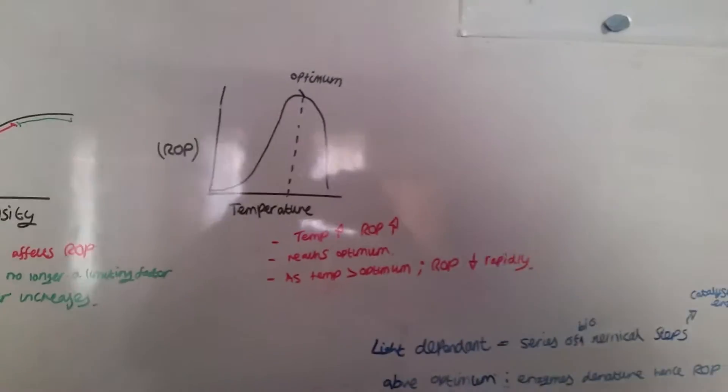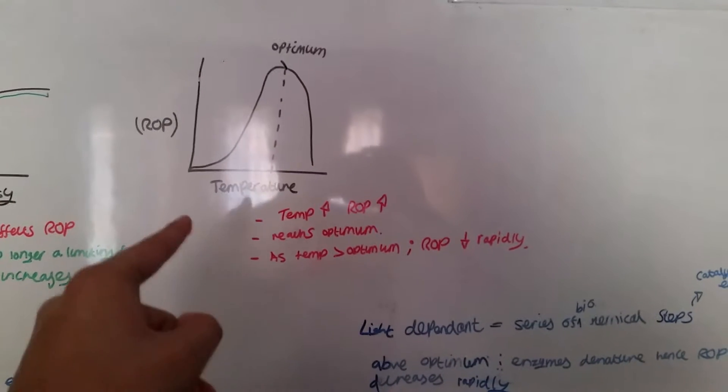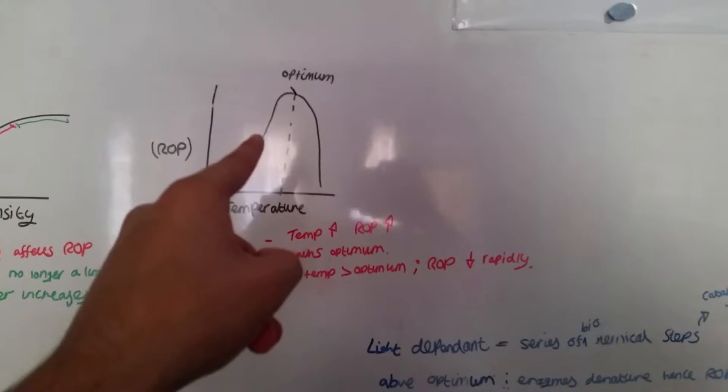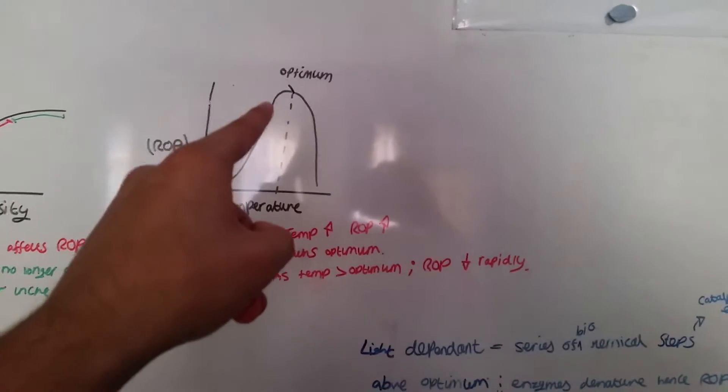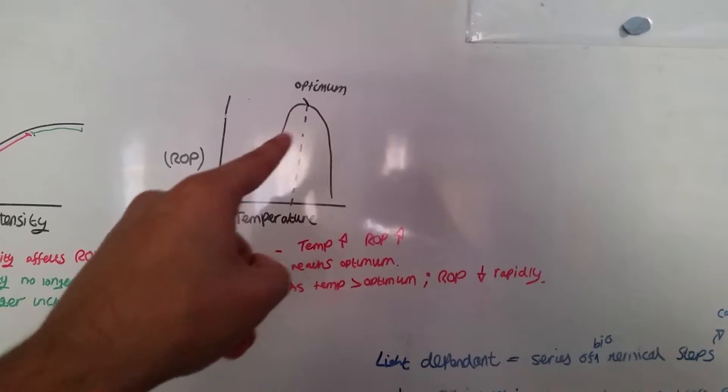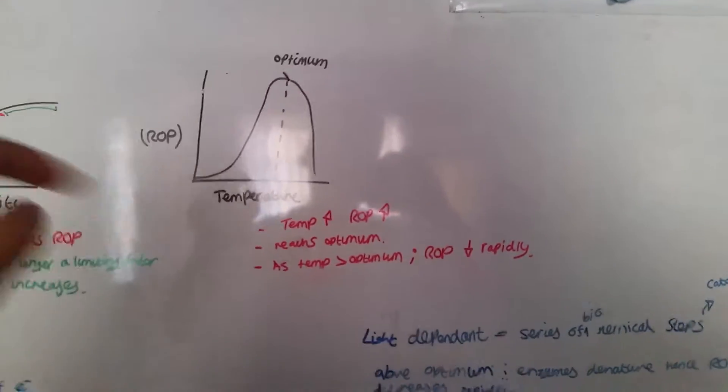Temperature is a little bit different. So as temperature increases, ROP increases. However, as the temperature exceeds the optimum temperature, ROP plummets rapidly.